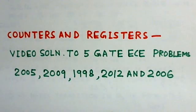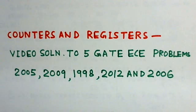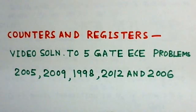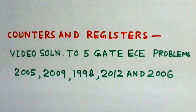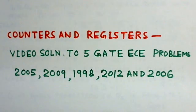The second problem is from GATE EC 2009 and is on a synchronous counter having two JK flip-flops. The counting sequence of the given counter is to be determined. Since it is on a synchronous counter, it has been taken up separately. The third problem is from GATE 1998 and is on the modulus counter.